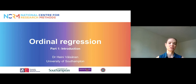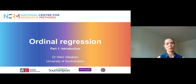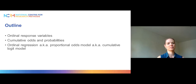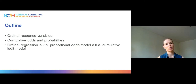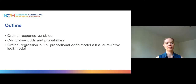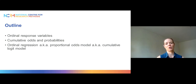This first part is an introduction to the method and it will tell you when to use the method and what kind of variables we need. The outline of the session is as follows: first we will talk about ordinal response variables, then about cumulative odds and probabilities, and finally we will look at the model itself — sometimes called the proportional odds model or cumulative logit model.